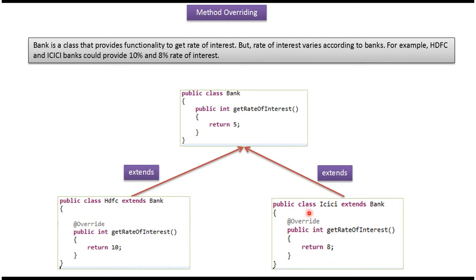Here you can see class ICICI which extends the bank class and overwrites the getRateOfInterest method and returns 8. ICICI bank is a subclass and bank is the super class, and the ICICI subclass overwrites the getRateOfInterest method. This is an example of overriding.